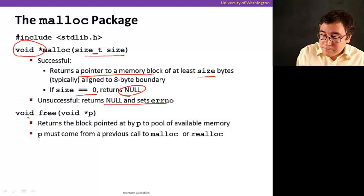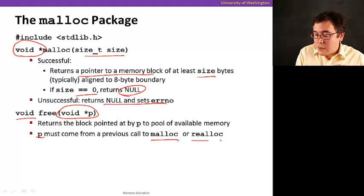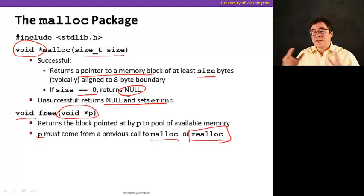And now, free doesn't return anything, but it takes a parameter, a pointer p, that is a pointer to the beginning of a block. And p must come from a previous call to malloc or realloc, but realloc just resizes the size of a block. And what free does, it returns this block pointed by p back to the available pool, so it can be used in the future.